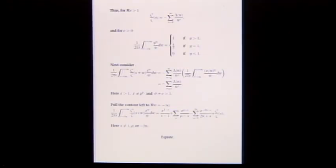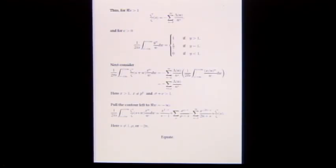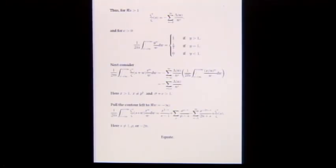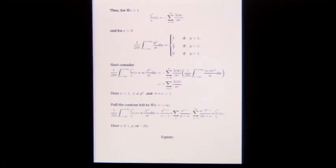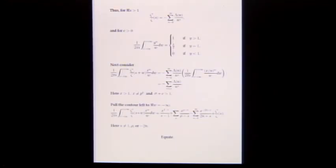We need x bigger than 1, and x should not be a prime power — because if x equals a prime power, when n is that power we'd get 1/2 rather than 0 or 1. We need sigma plus c to be large enough to put in the absolutely convergent Dirichlet series for zeta prime over zeta.